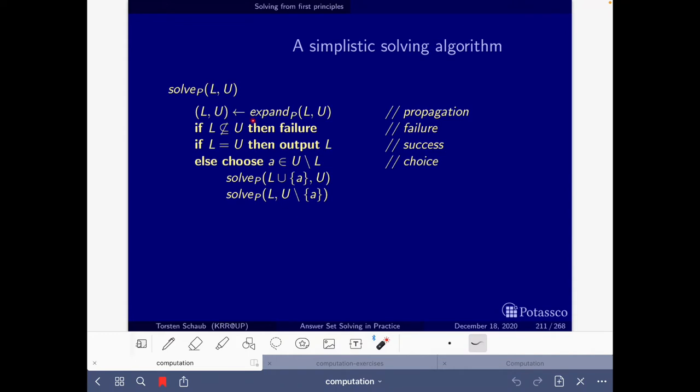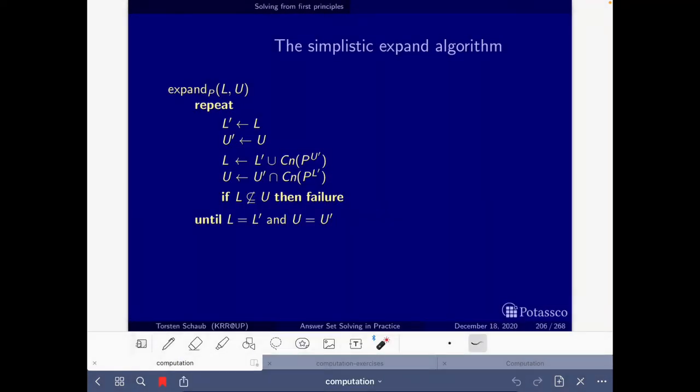This is the algorithm. Here we have this call to this function expand, and here we have this choose step where we reason by cases by calling solve P making A true, and here we call it making A false or saying that A is not possible anymore. Let's go quickly to see the other slide where this expand of P is specified.